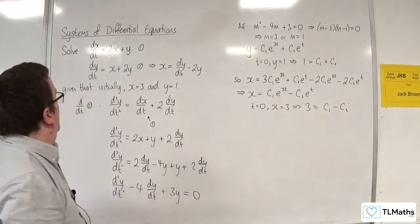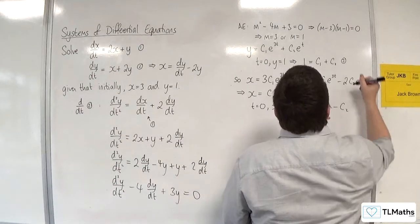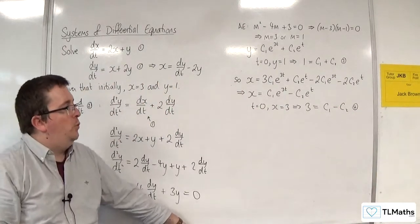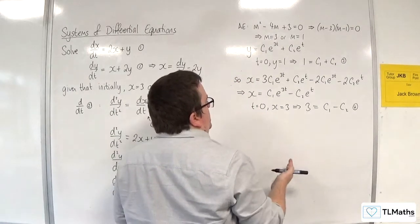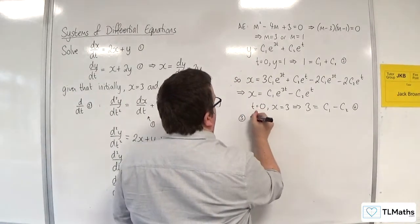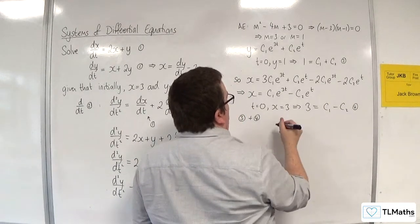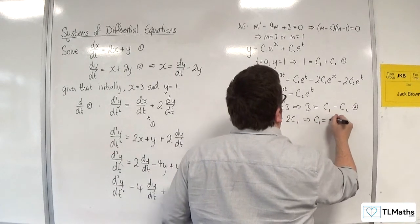Let's call those equation 3 and 4. So I can solve those two simultaneous equations. Quite straightforward to just do this by adding them together, 3 plus 4, c2 is knocked out. So we'll have 4 is equal to 2c1, so c1 has got to be equal to 2.